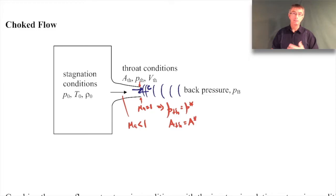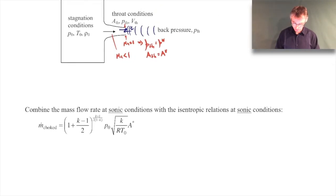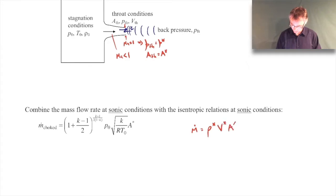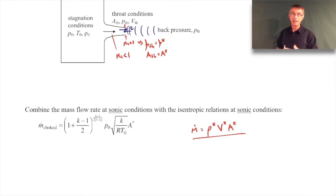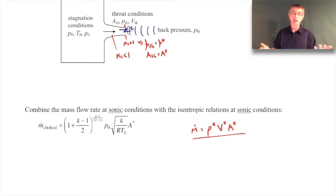We can calculate the mass flow rate for choked flow conditions — I won't derive it, but the derivation is in the book-style notes. You just calculate the mass flow rate at sonic conditions: mass flow rate equals rho-star times V-star times A-star. You make use of the isentropic relations: plug in rho-star over rho-naught, note that V-star equals C-star (speed of sound at sonic conditions), substitute the expression for C-star over C-naught, and A-star is the throat area when the Mach number equals one.